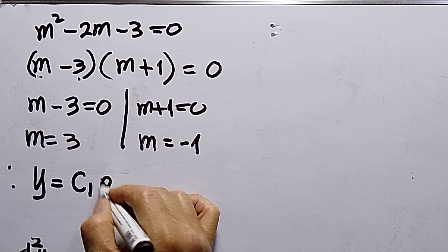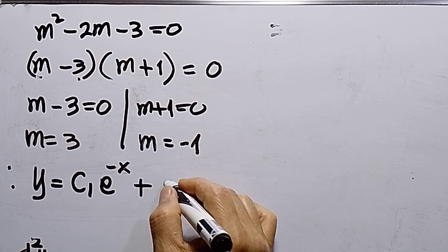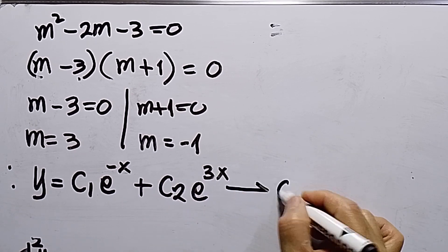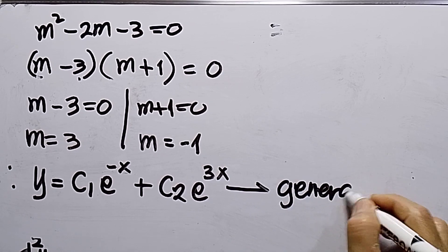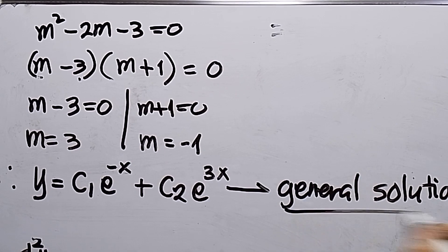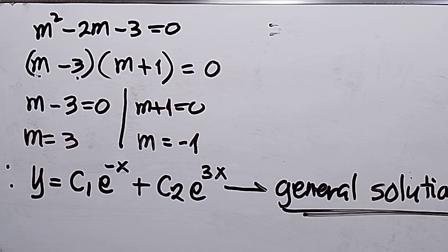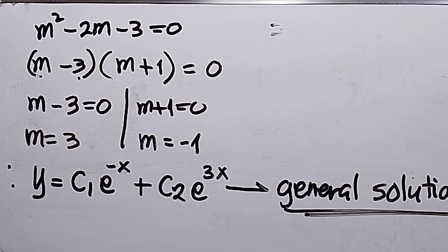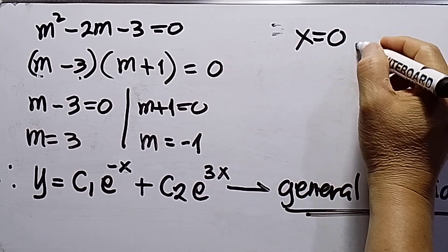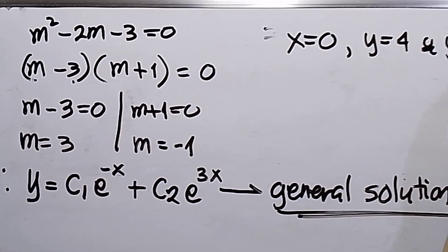From these roots I can write the general solution: y equals c1·e^(negative x) plus c2·e^(3x). However, we are asked for the particular solution because we have been given initial conditions: x equals 0, y equals 4, and y prime equals 0.